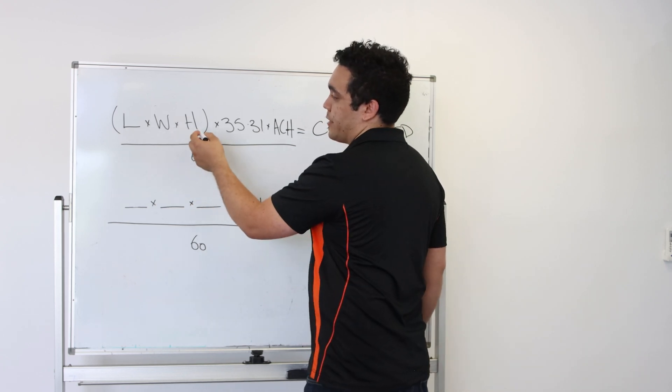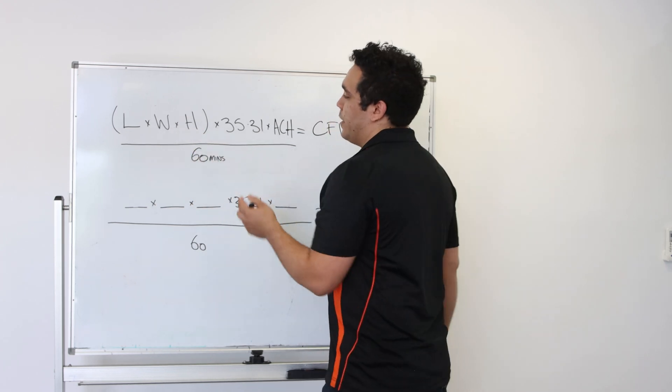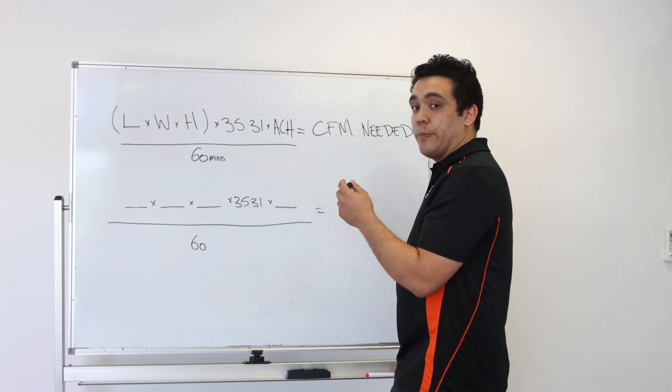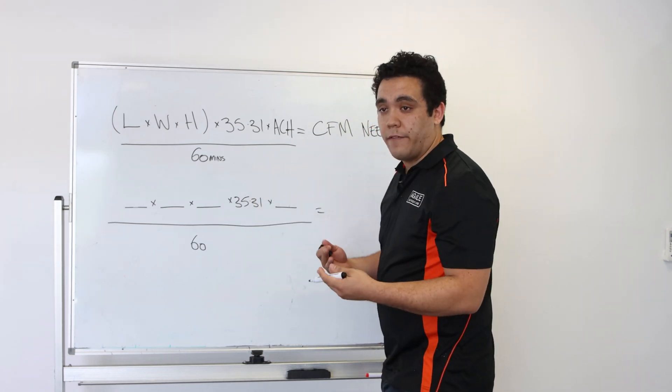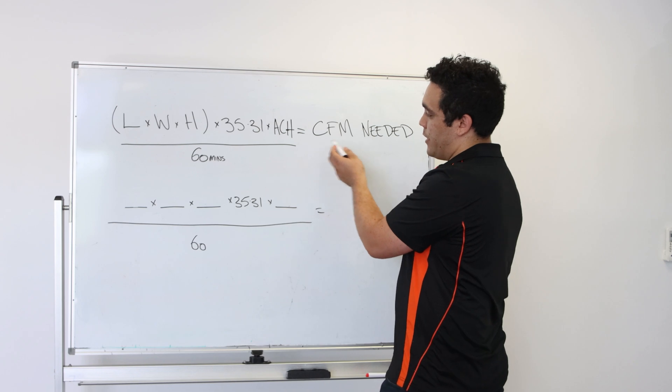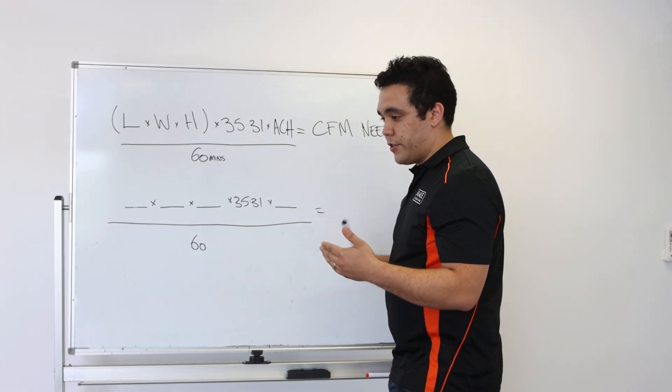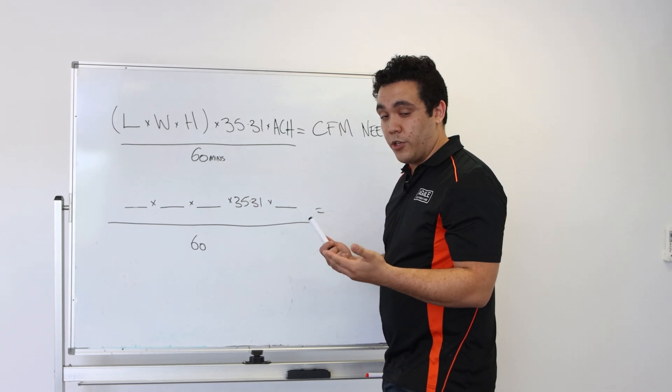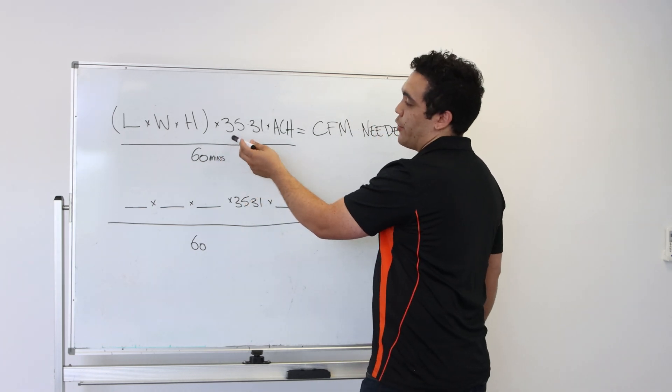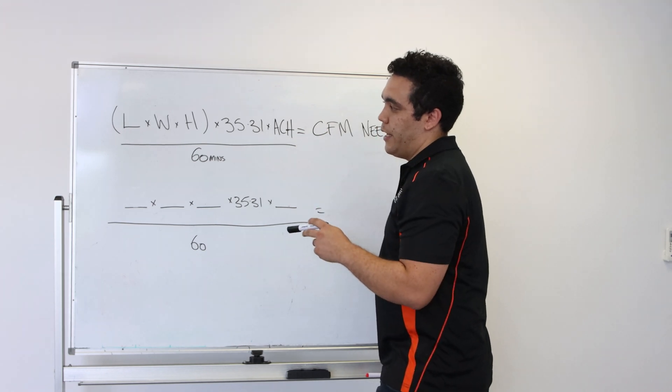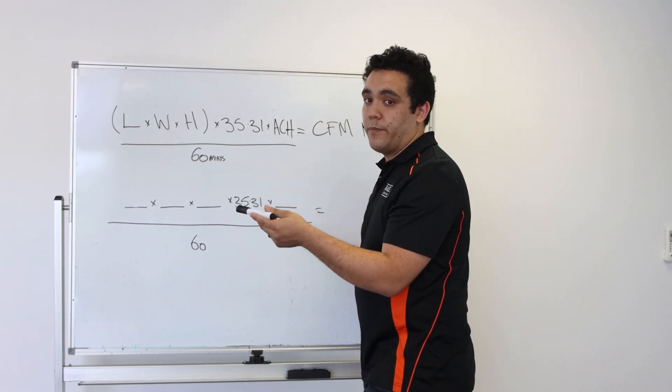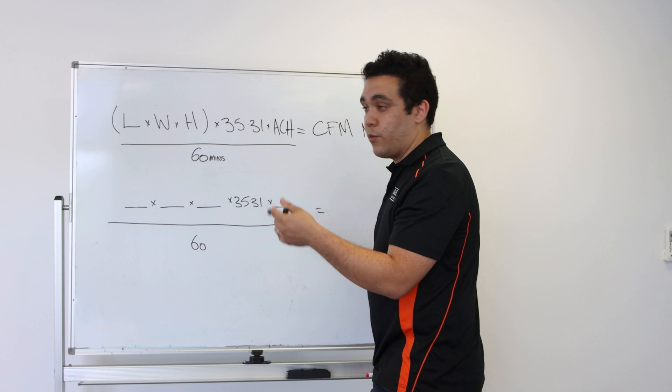So that's the length times width times height in meters, and because most air filter units are described in CFM, it means we'll need to convert to imperial units to cubic feet. So we multiply that by 35.31, and that'll give us the amount of cubic feet of air in the room.